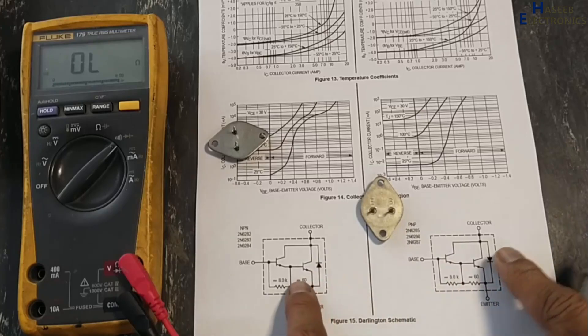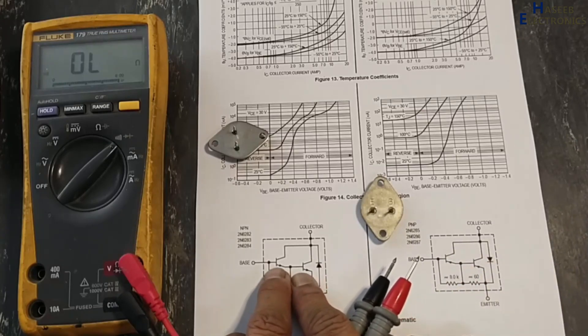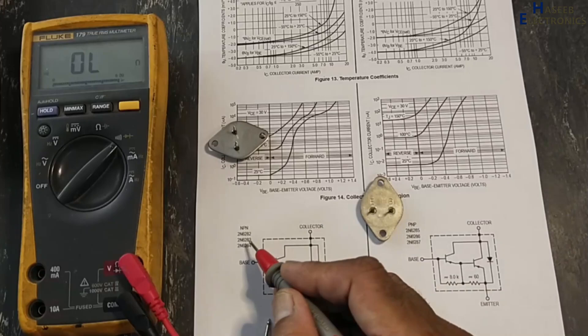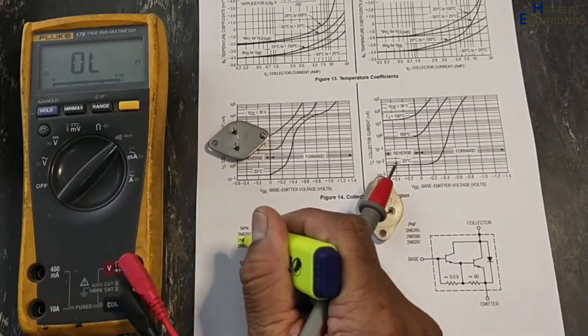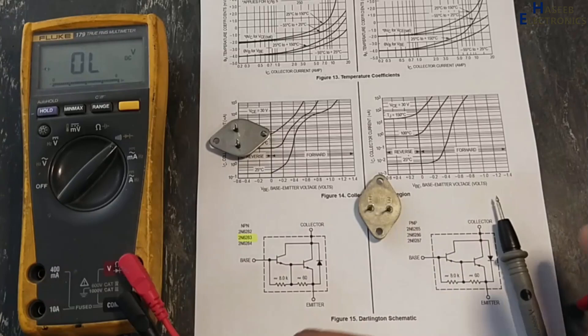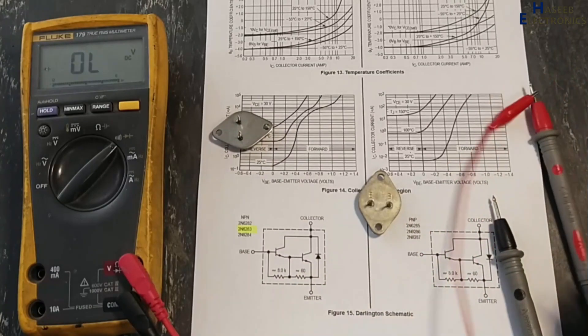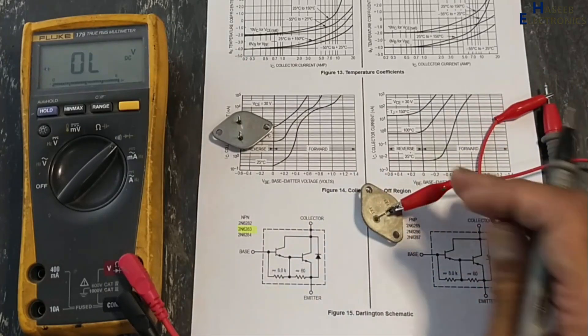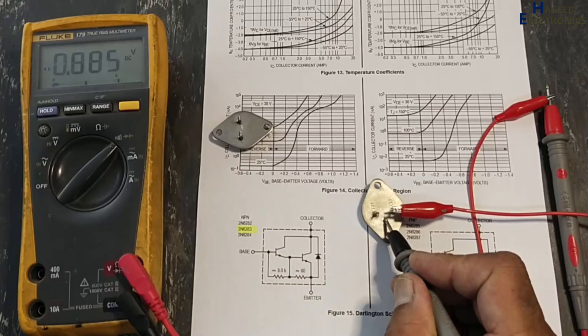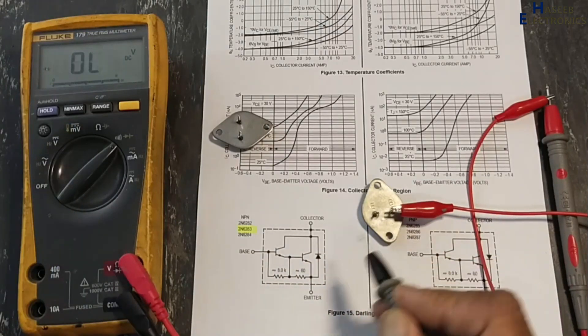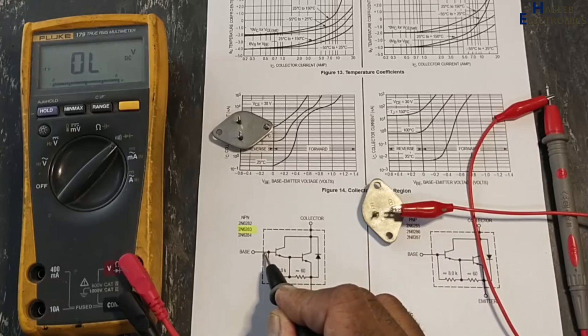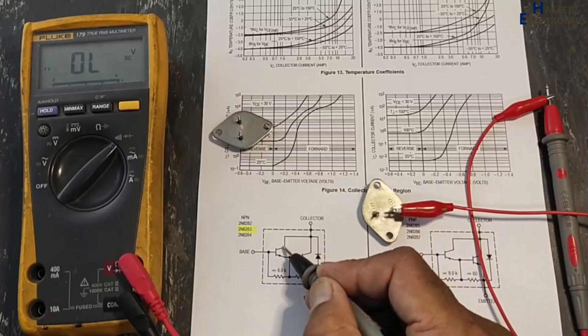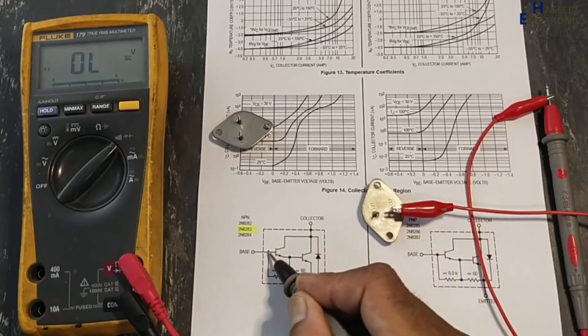Transistors are NPN. Now we are testing NPN 6283. Set multimeter to diode. NPN base is positive, so we will connect red lead at base and black at collector. 0.583 when base is red positive, collector is black negative. That means we are testing this junction, one diode forward bias, 0.58 volt.